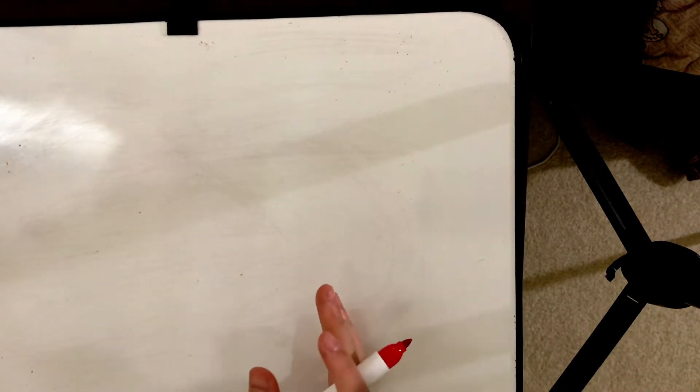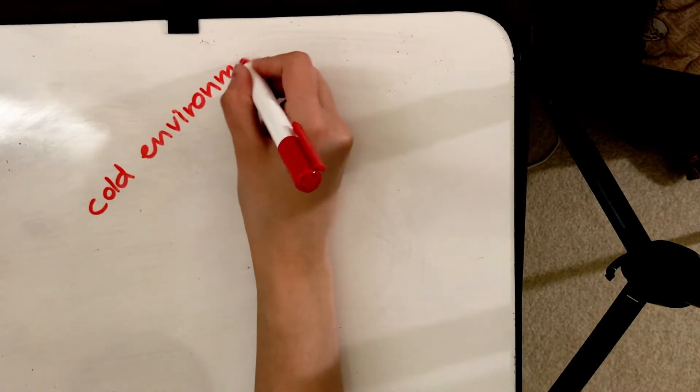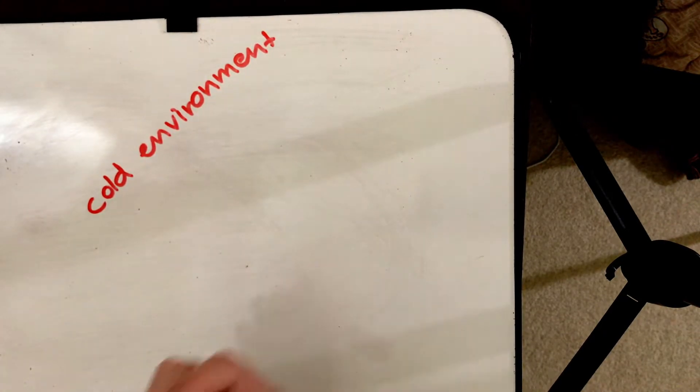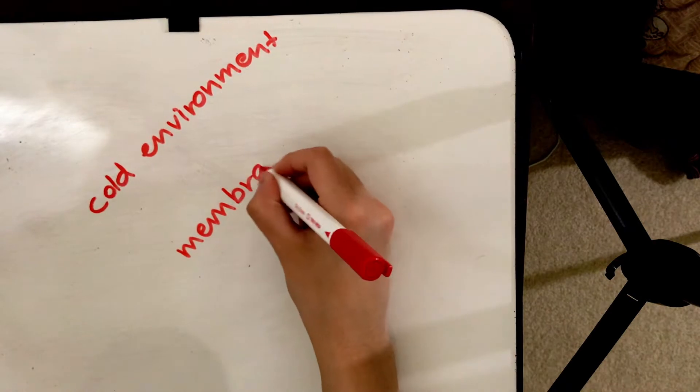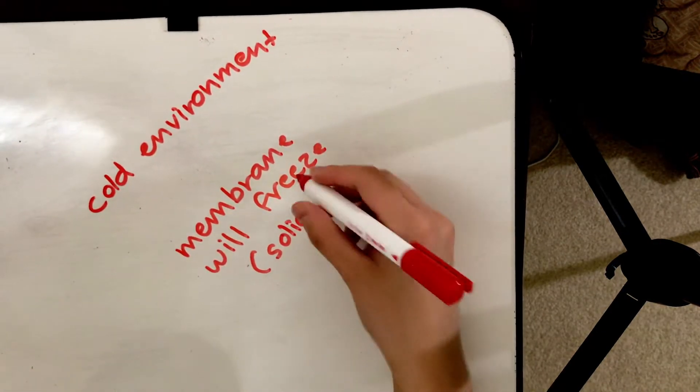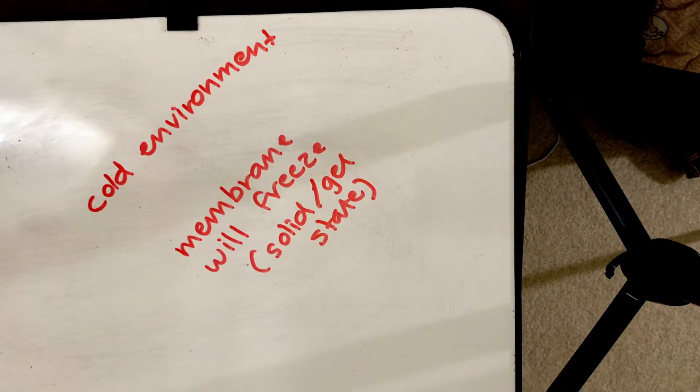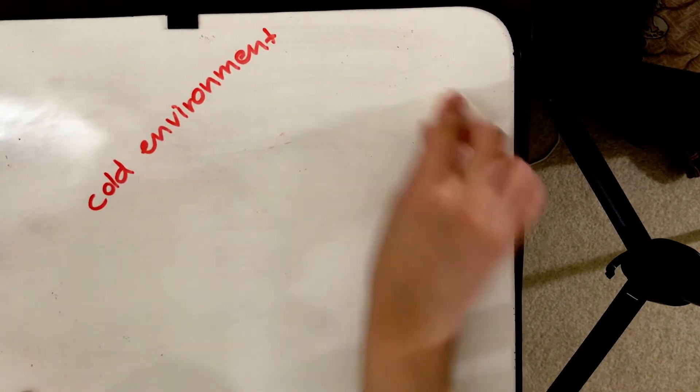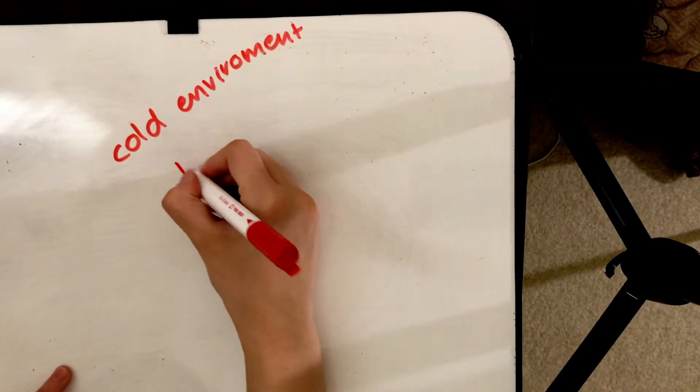In terms of an example, say our membrane is in a cold environment. What do you expect the natural response is going to be? The membrane will freeze, obviously, and it's going to be in a solid or gel state. But say as a scientist you want to keep your membrane in a cold environment but also want it to be fluid.